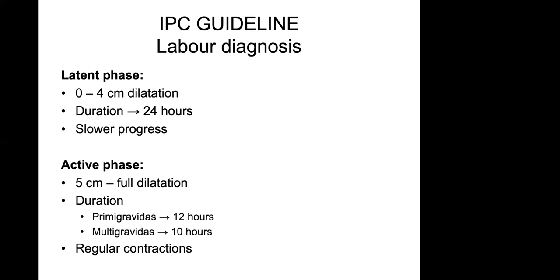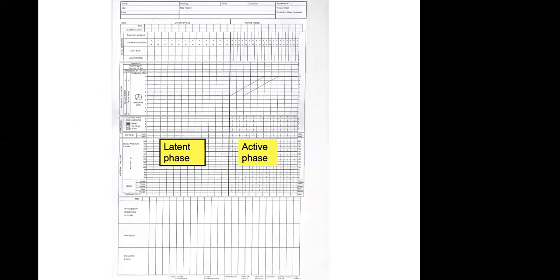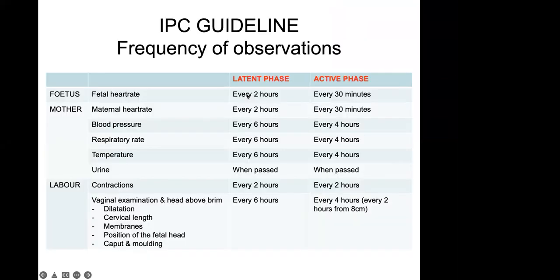The active phase runs from five centimeters to full dilatation. As mentioned from WHO recommendations, it can go up to 12 hours in a primigravida and up to 10 hours in a multigravida. On the full updated partogram, the latent phase is on the left and the active phase on the right. The latent phase has 12 blocks, two hours per block, allowing for 24-hour monitoring. The active phase has one hour per block, with an alert line and a review line. If you need to remember something about this whole update: why has the partogram changed, and what is the frequency of observations.